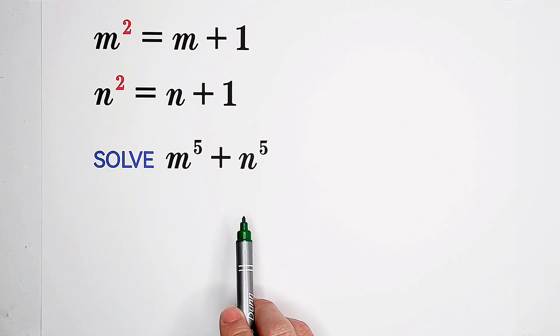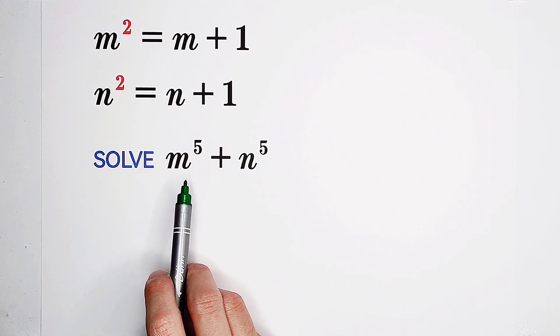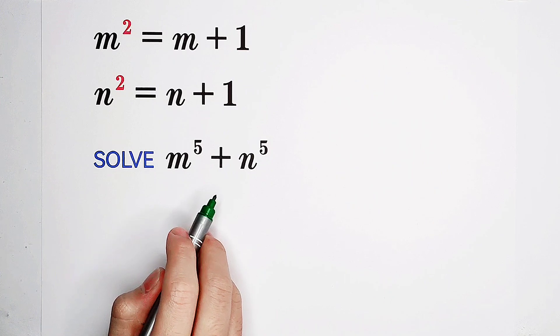Why? Because to the power of 5, how can you deal with this? This 5 on the exponent is too large. Nobody is able to cope with this.